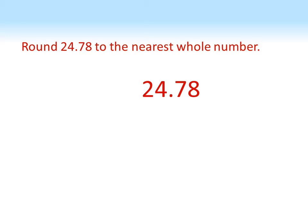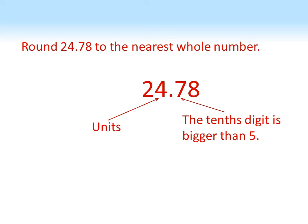We're now going to try and do some rounding but without the number line. So we want to round 24.78 to the nearest whole number. What we're going to do is look at the units digit and the tenths digit. We can see that if the tenths digit is 5 or bigger, we round the units up.